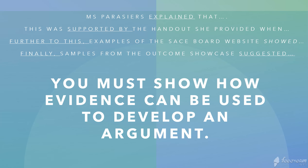In my example, the first piece of evidence is introduced and explained, then referenced against how it was supported by the handout. Further to this, there were examples from the SACE board, and finally samples from the outcome showcase. So there are four pieces of evidence being introduced and used in a linking way so that we build an argument and are not just listing random facts.